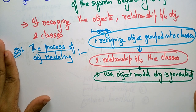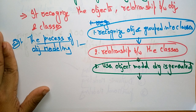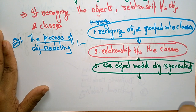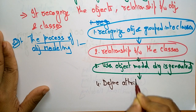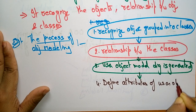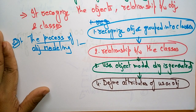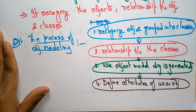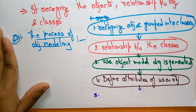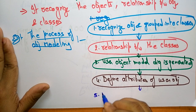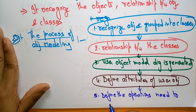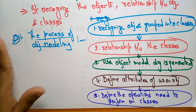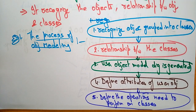After generating the user object diagram, we define the attributes of the user object — what attributes are present in the user object. Finally, the last step is to define the operations needed to perform on these classes. This completes the process of object modeling.